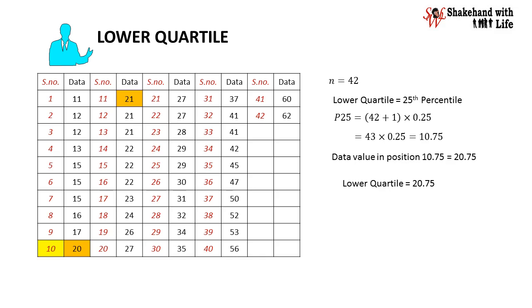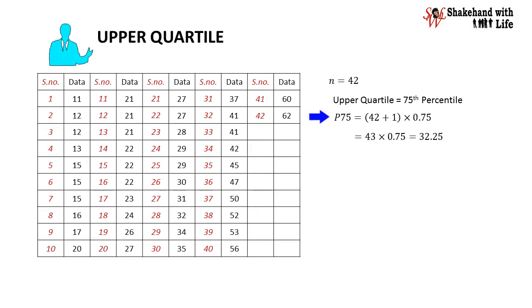Now, we will find the upper quartile. Upper quartile is the 75th percentile given by P75 equal to 42 plus 1 multiplied 0.75 or 43 multiplied 0.75 and we get 32.25. Now, the data value in position 32.25 is 41, hence the upper quartile for the given data set is 41.